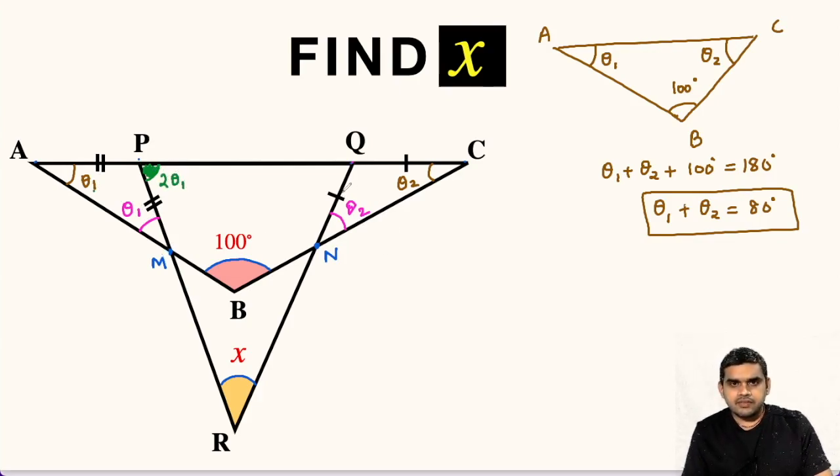Likewise, if we focus on triangle QNC, once again, this angle will be an exterior angle. So the value of this angle will be the sum of theta 2 plus theta 2, that is 2 times theta 2.